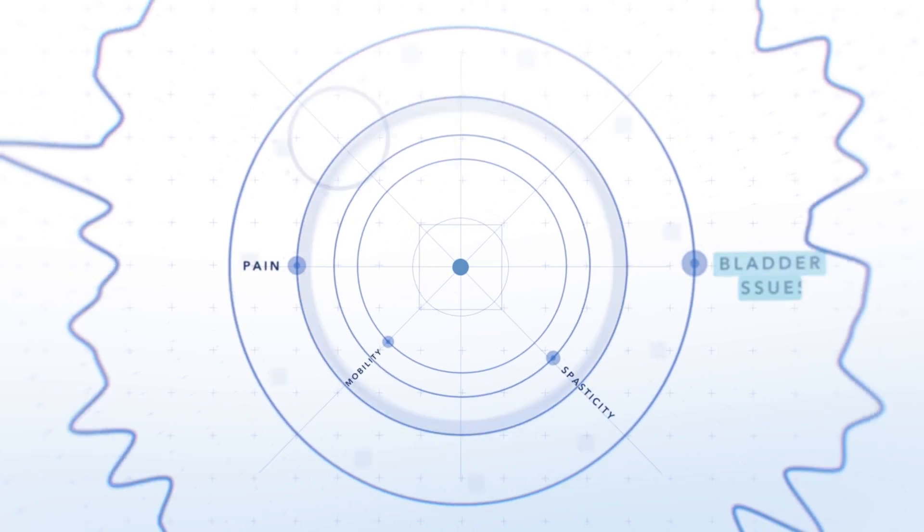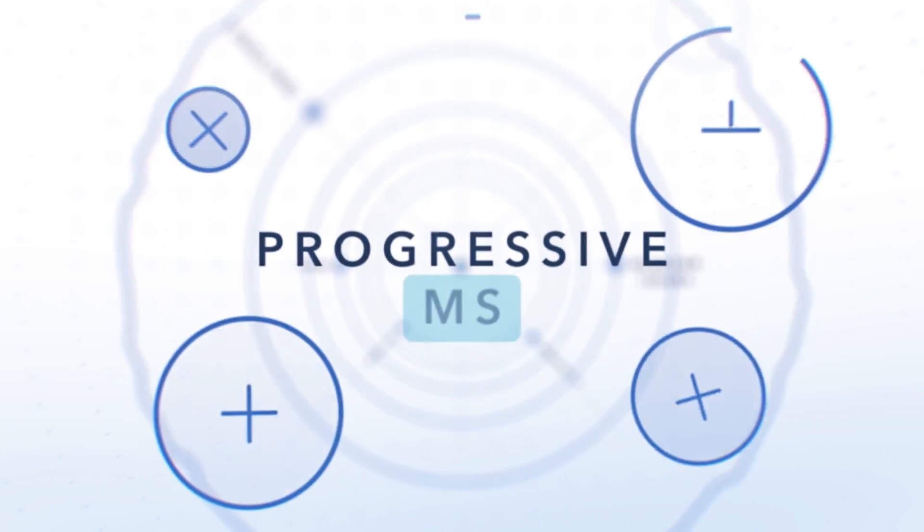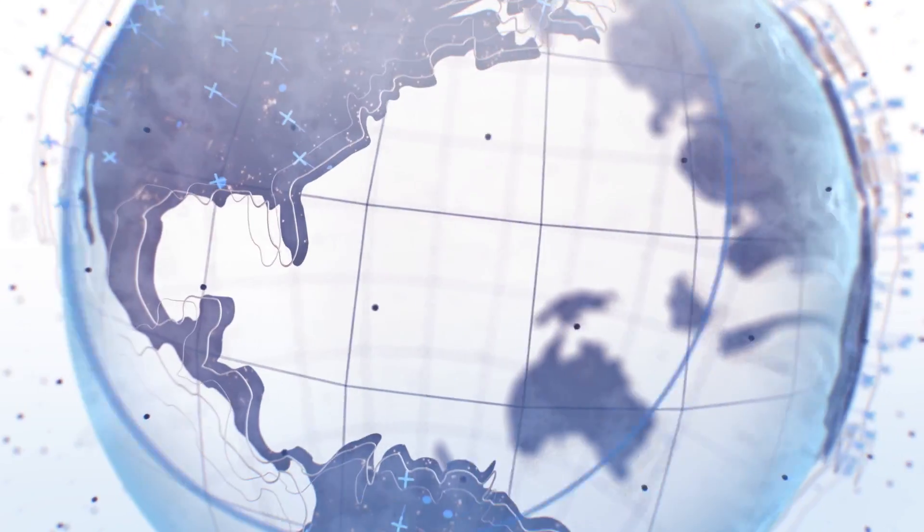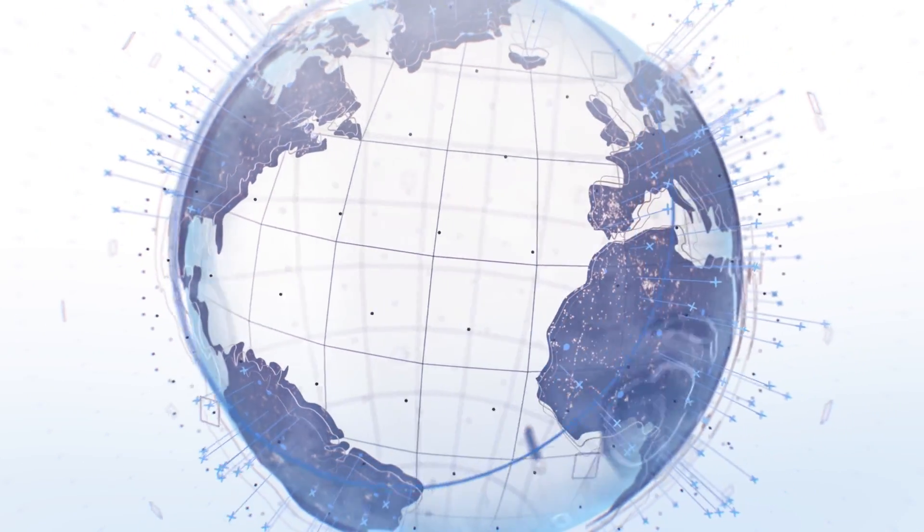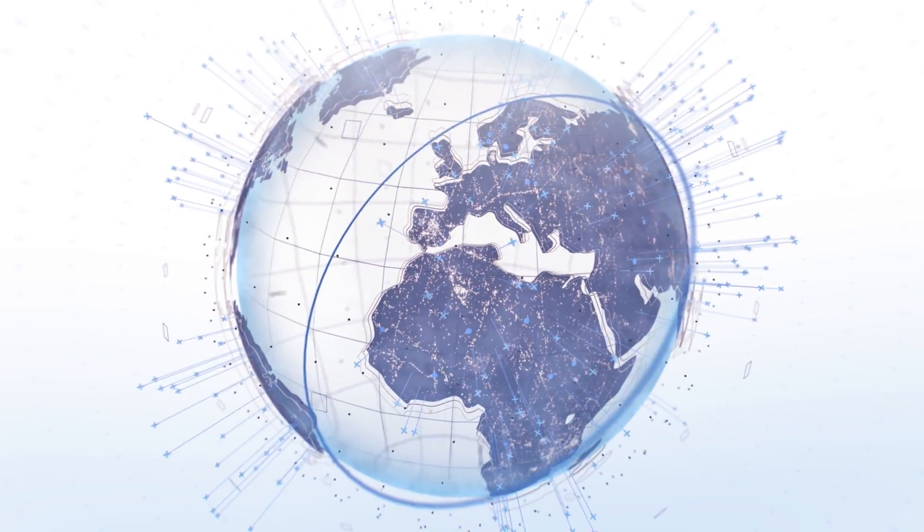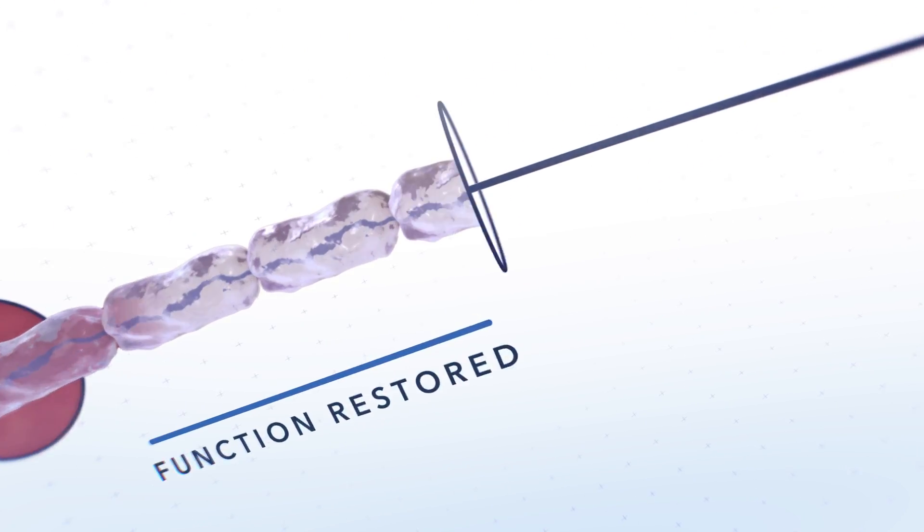There is no therapy yet that can slow down or stop progressive MS. Worldwide research is accelerating the discovery of how to slow down or even stop progressive MS, how to repair nervous system damage and restore function.